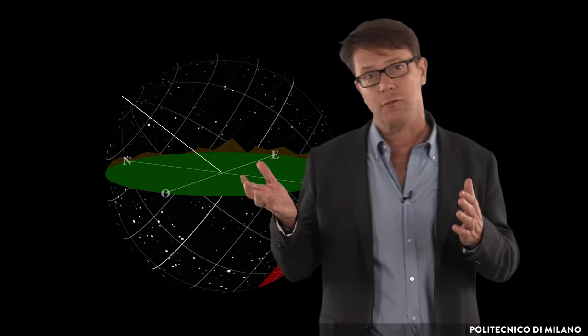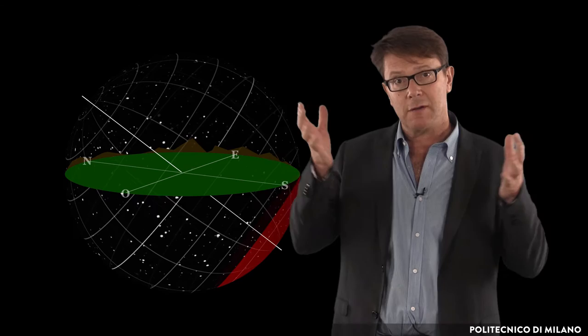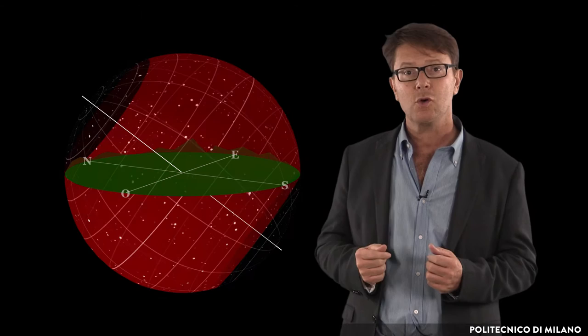In other words, the visible portion of the heavenly vault depends on the position of the observer. All the non-circumpolar stars rise and set.